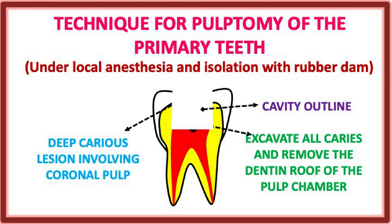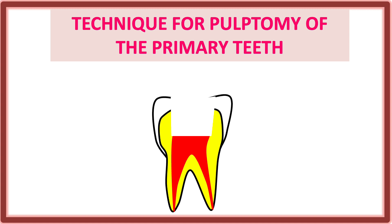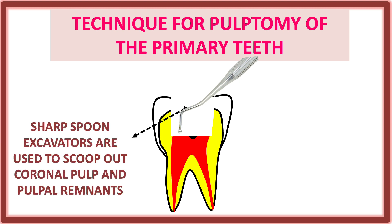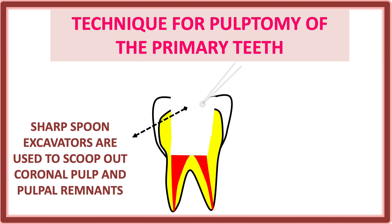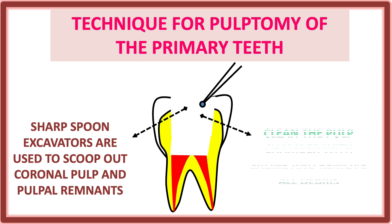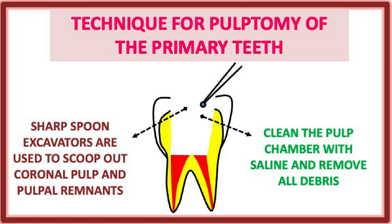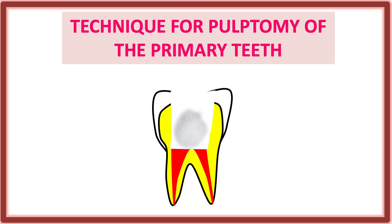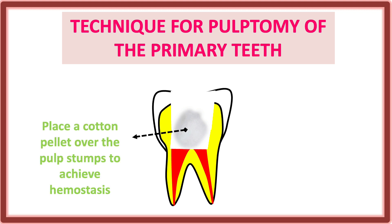Sharp spoon excavators are used to scoop out the coronal pulp and pulpal remnants — the coronal pulp is removed with the spoon excavator. Then clean the pulp chamber with saline to remove all debris.